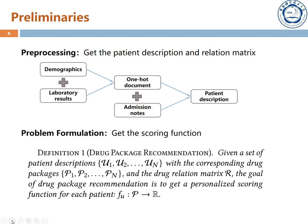In order to integrate the above multi-source heterogeneous data, for demographic and laboratory results, we convert and combine them into a one-hot document. For admission notes, we convert them into the same length by padding and cutoff. Then we get the patient description. For the drug interaction data, we construct a relation matrix which will be discussed in detail later. Based on these data, we formulate the drug package recommendation problem: given a set of patient descriptions with the corresponding drug packages and the drug relation matrix, the goal is to get a personalized scoring function for each patient.